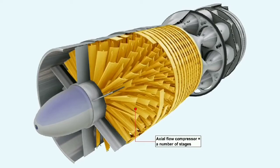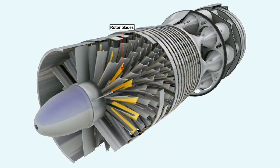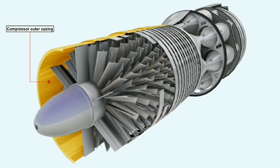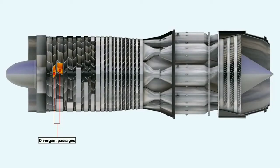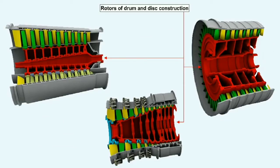The axial flow compressor consists of a number of stages. A stage embodies one row of rotor blades of airfoil section fastened to a disc, followed by one row of stator vanes, also of airfoil section, fastened to the compressor outer casing. The spaces between the rotor blades and the stator vanes form divergent passages. A number of discs — equating to the number of stages — are fastened together to form an integral rotor drum, which is driven by a turbine.